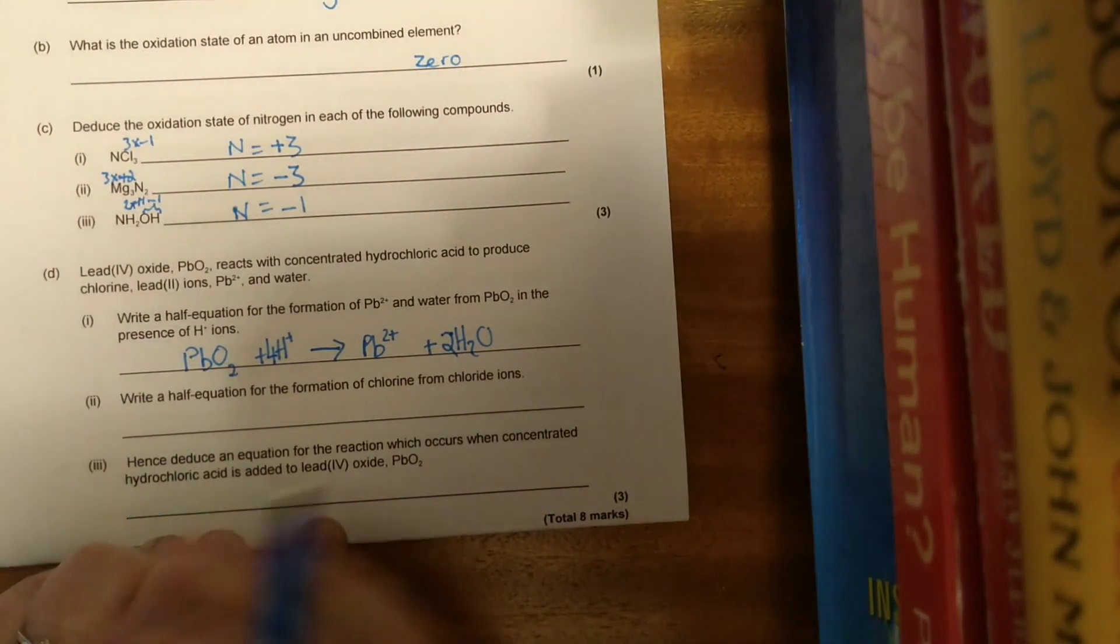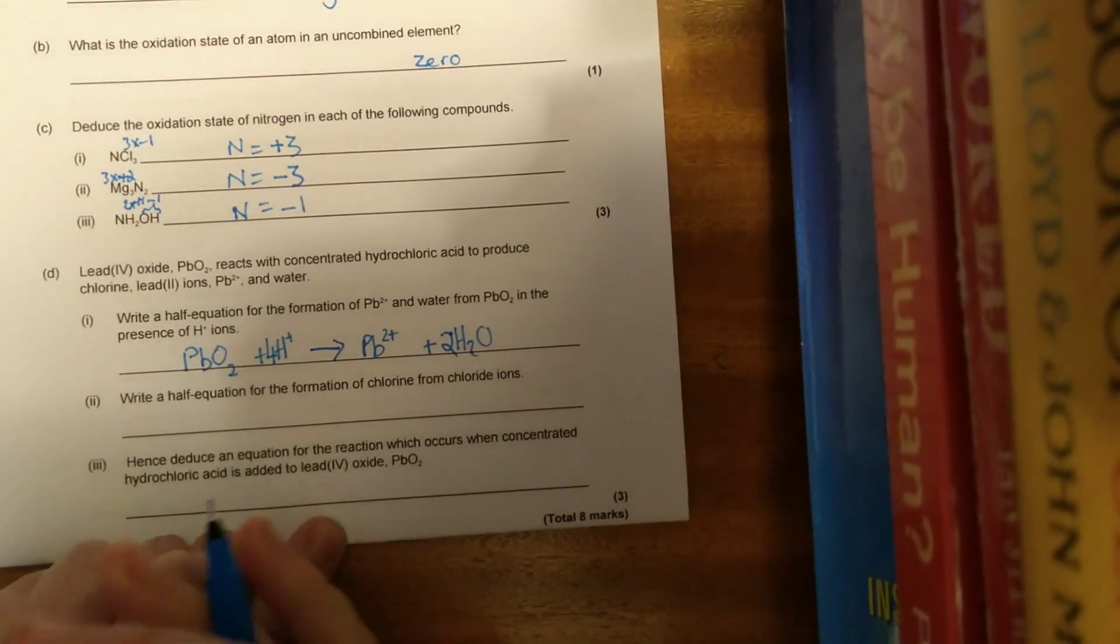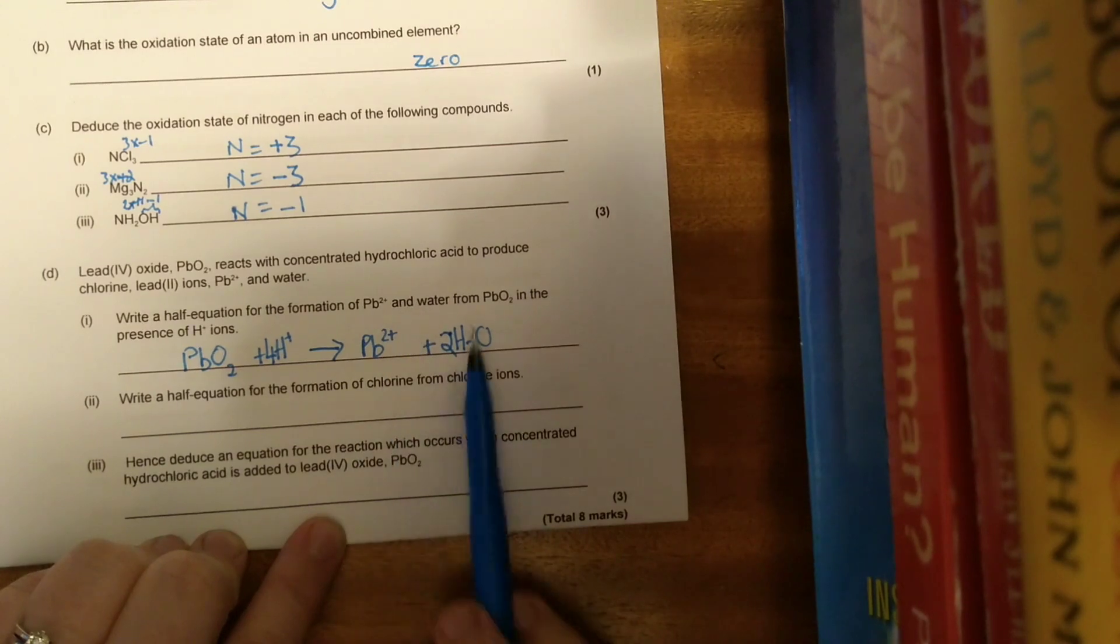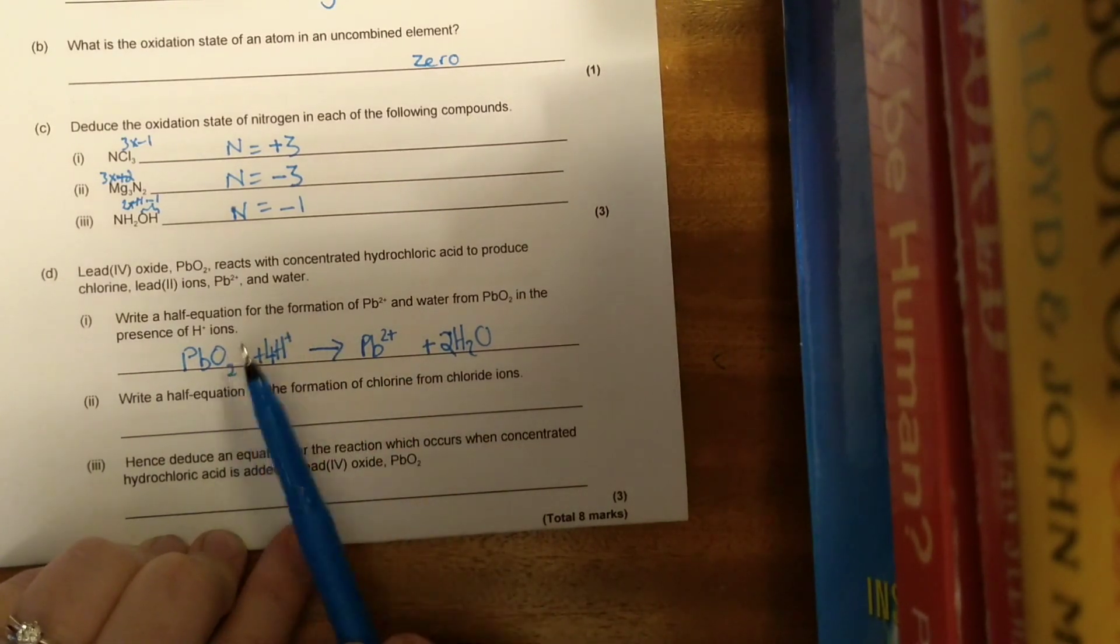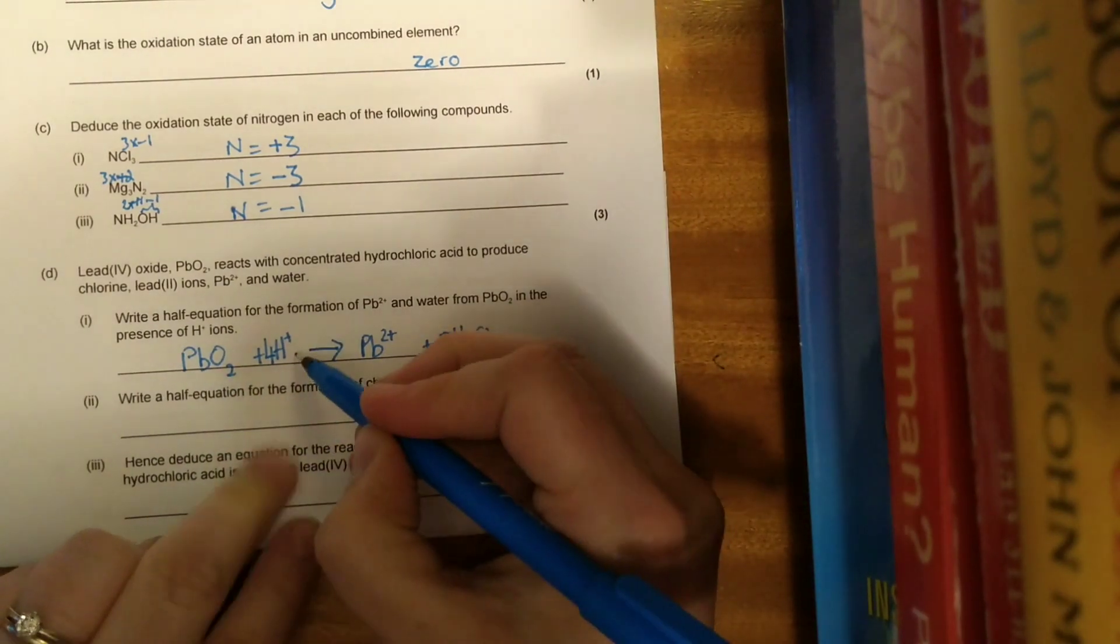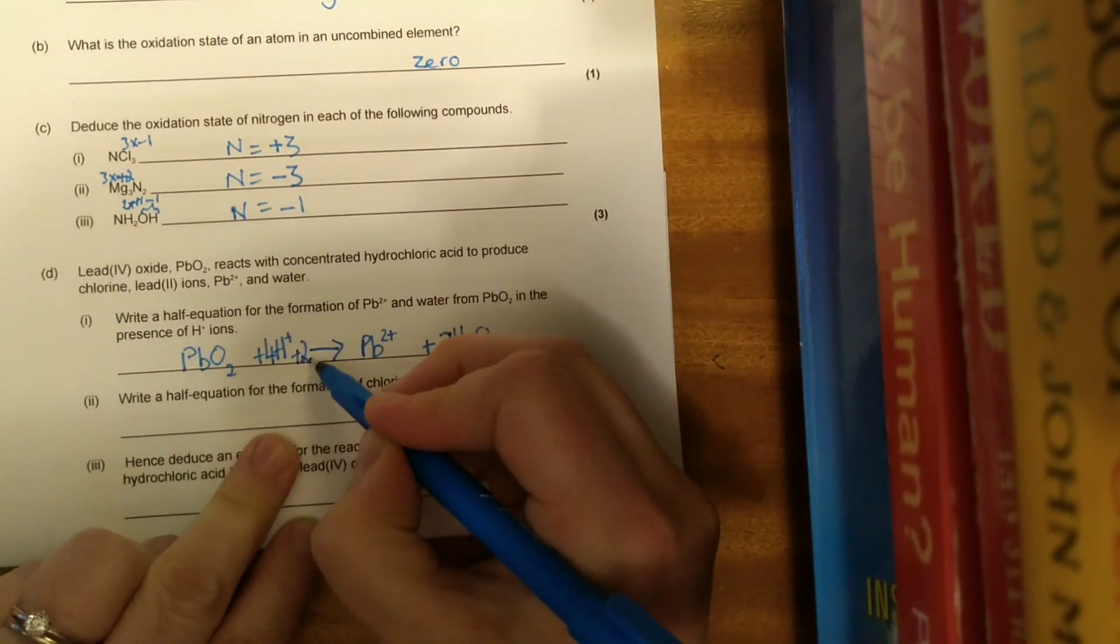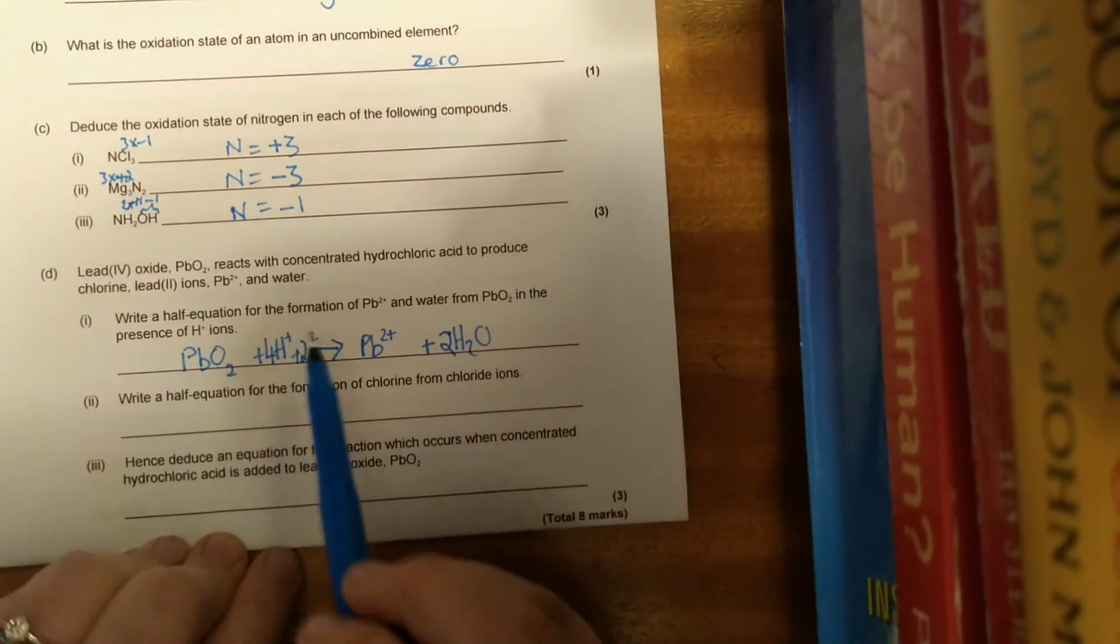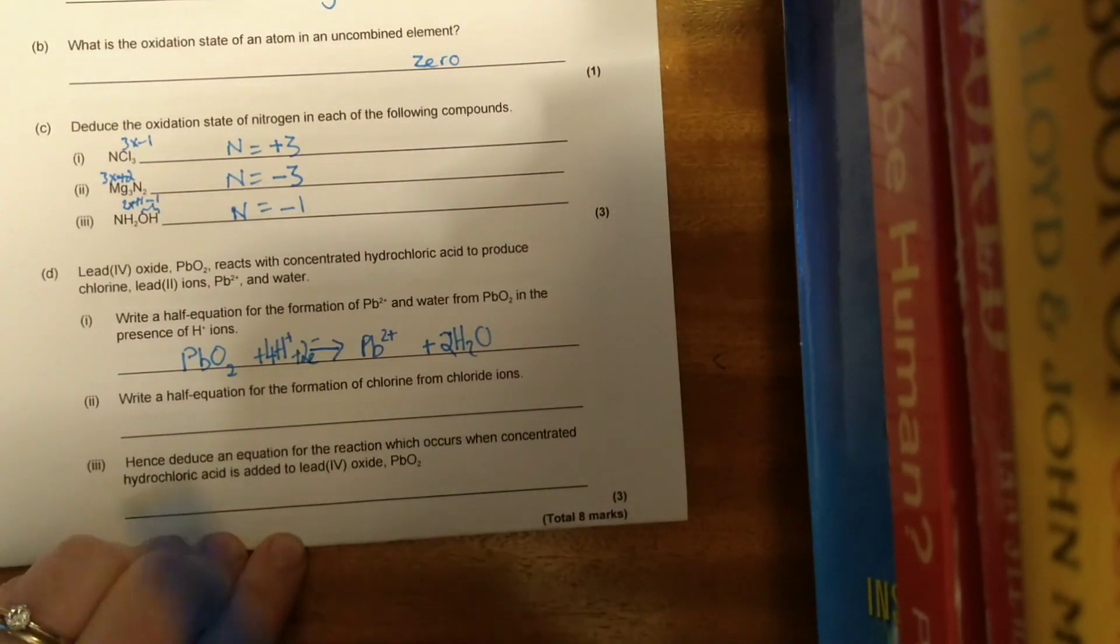If we break it down, let's sort out our oxygens. We've got two on this side, so we need two lots of the water. We then need to make sure that our hydrogens are balanced. We've got four on this side, so we need four H pluses.